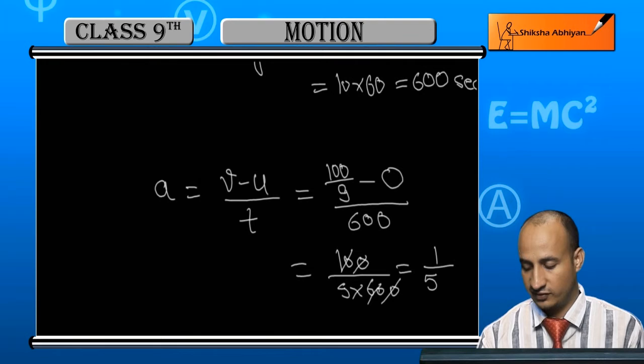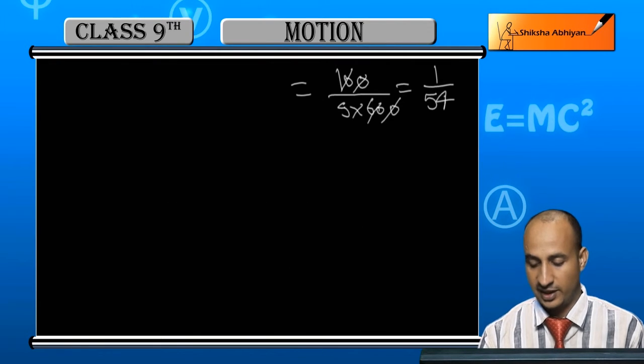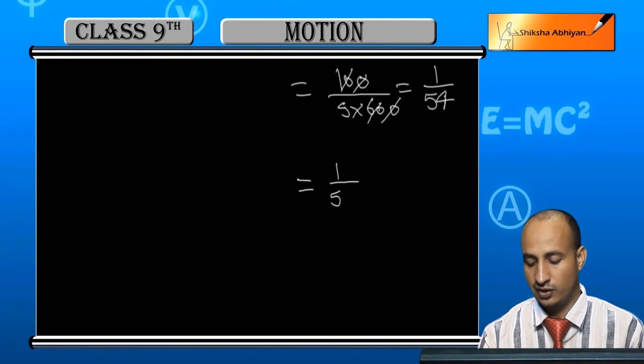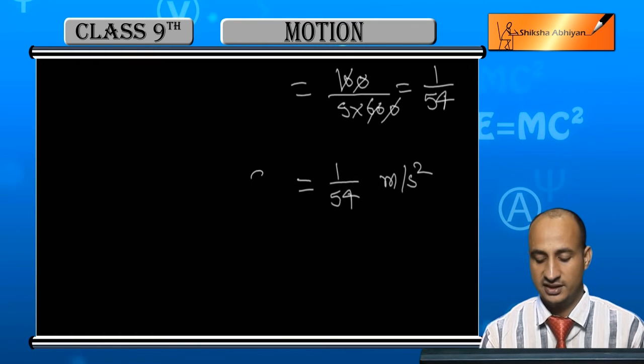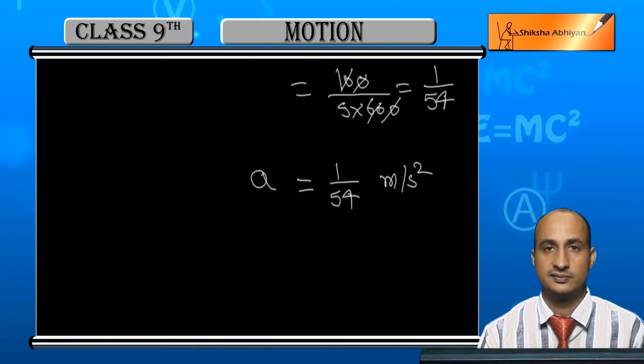So 54, this will happen how much? Acceleration 1 upon 54 meter per second square. Acceleration and train come.